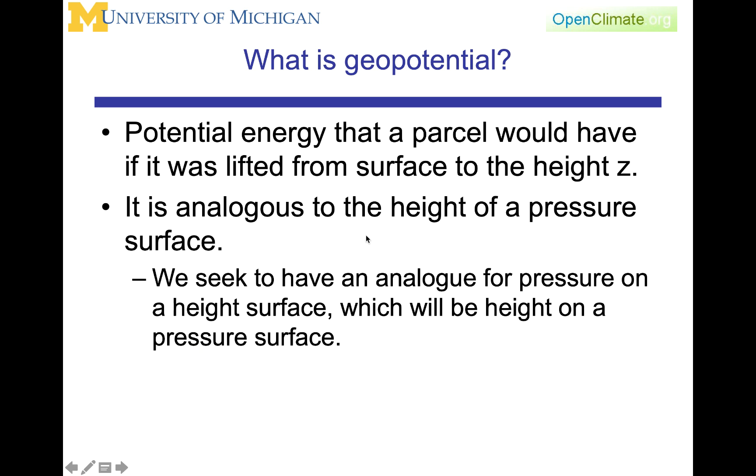Geopotential is analogous to the height of a pressure surface. We seek to have an analog for pressure on a height surface, because in our momentum equation, if we're now going to use pressure as the independent vertical coordinate, then we need something on a pressure surface that can act like the pressure gradient. And that will be the height of the pressure surface, because you can imagine that if you have a sloping pressure surface, then you're going to have a horizontal gradient.